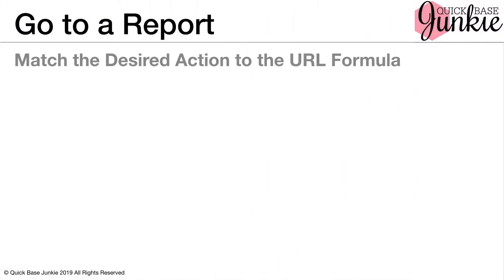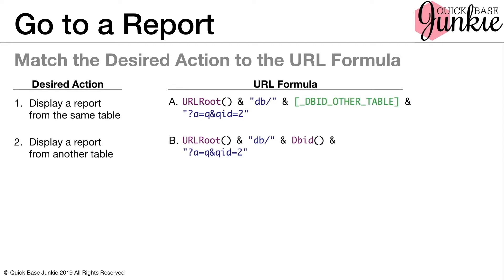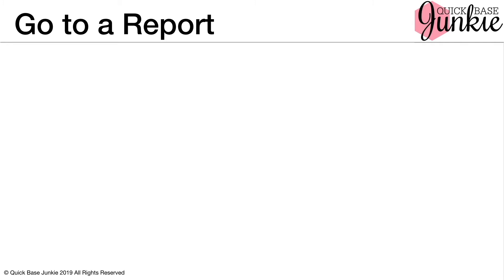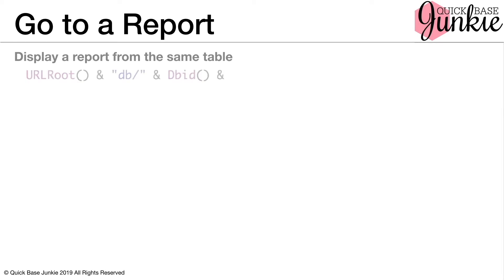Time for another matching game. Pause the video to match the desired action for a report destination to the URL formula. Alright, that was an easy one, but in case you didn't get it, the answers are in the bottom corner. Let's break these down one by one. To display a report from the same table, we'll use the URL root and the dbid function. Combine that with the action Q — remember Q stands for query or report — and then we'll add the query ID for the report. It's that simple.